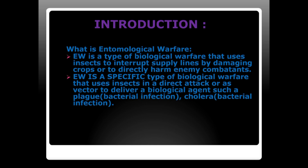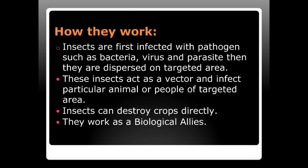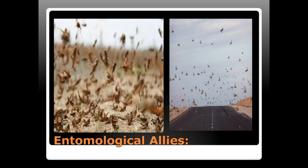Insects are first infected with pathogens such as bacteria, viruses, and parasites, then dispersed on targeted areas. These insects act as vectors and infect the animals or people of the targeted areas. Insects can also destroy crops directly, working as biological allies — here you can see swarms of locusts that destroy everything in their path.